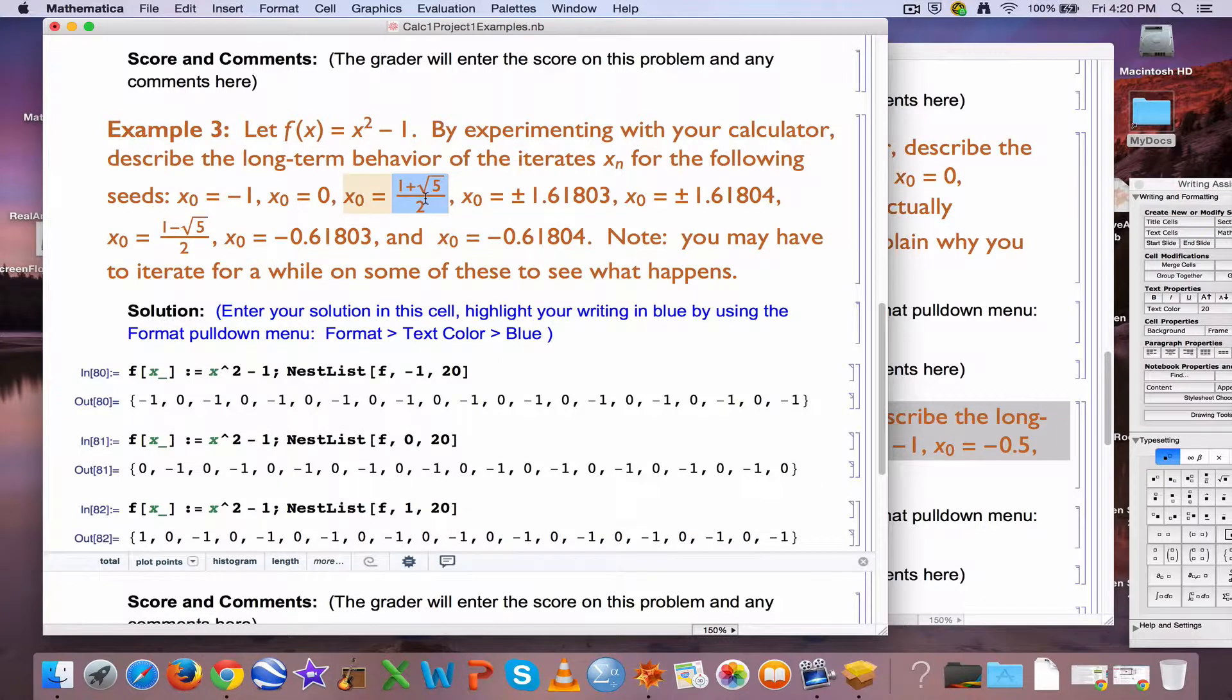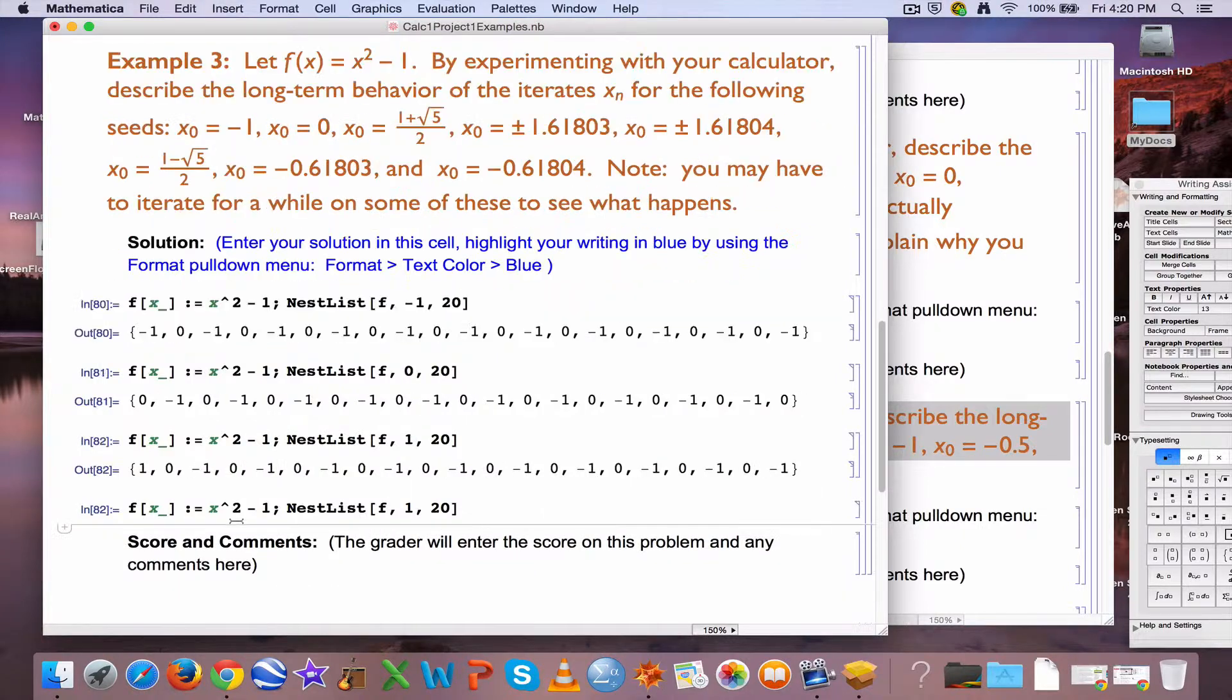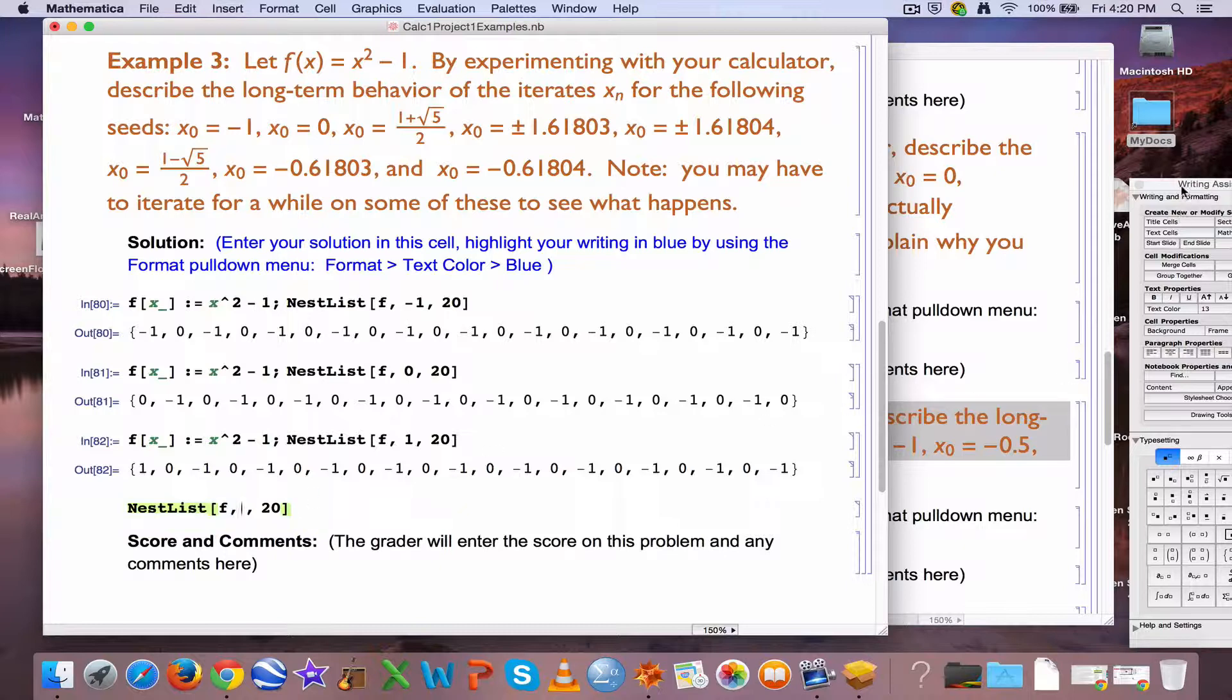All right, what about this seed here? (1 + √5)/2. Again, continuing to copy and paste. I don't have to actually do the f over and over again. Let's just do nestlist itself. Let's go ahead and put that exact expression into here.